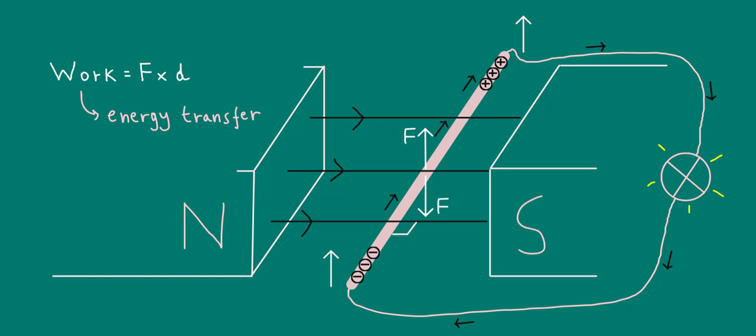As you move the wire up at a constant speed and do work, there is a transfer of energy from the chemical energy store in your body to the electrical energy store of the moving charges, which then gets converted to thermal and radiation energy stores as the bulb heats up and emits light.